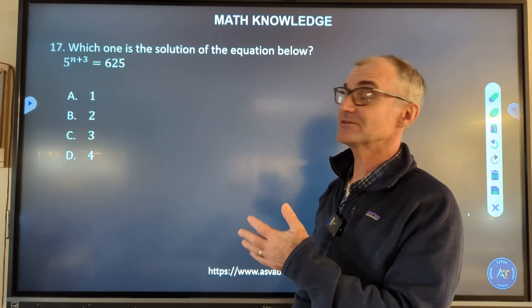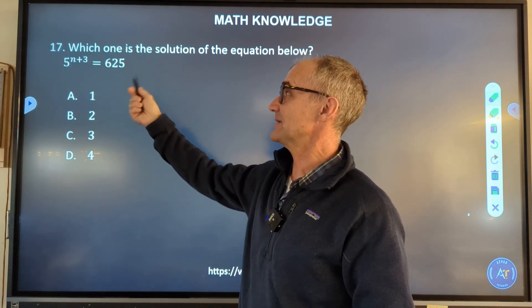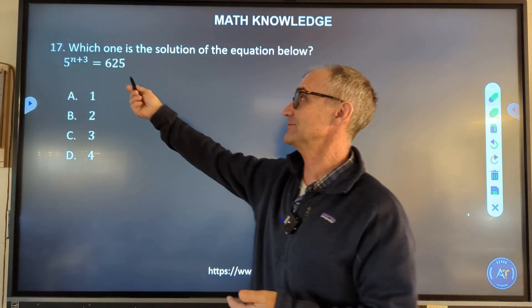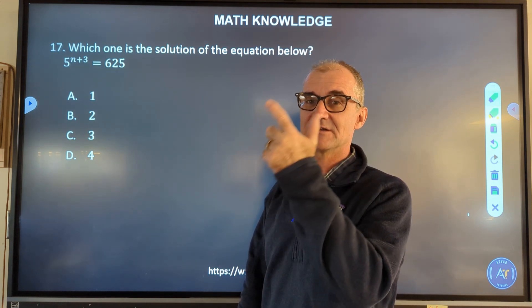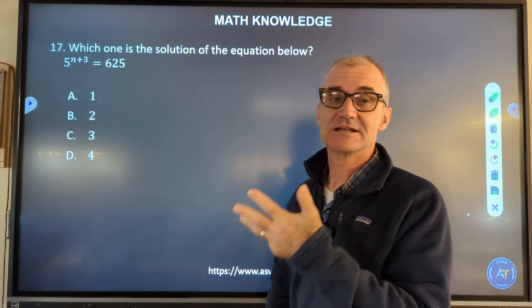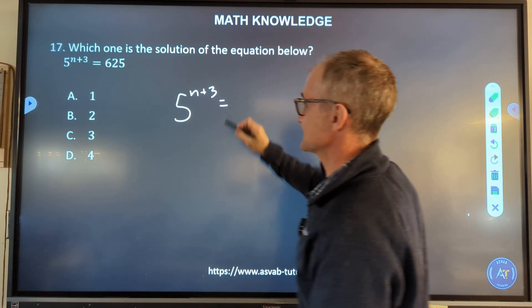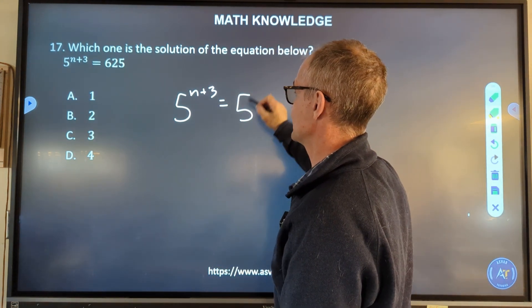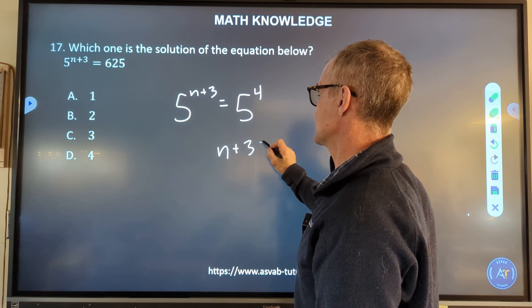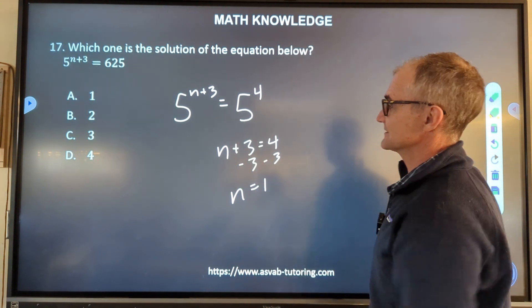Number 17 here, also going to be a test on exponents. I know that if my bases were equal, my exponents would have to be equal. My bases are not equal, but as I look up here, I can see 625 is divisible by 5, so I know that's probably going to be a base 5. So 5 times 5 is 25, times 5 is 125, 125 times 5 is 625. So this 625 right here is the same thing as 5 to the 4th power. So I have 5^(n+3) = 625, or I could write that as 5^4. My bases are equal, therefore my exponents have to be equal. n + 3 = 4. Subtracting 3 from both sides, I could see n equals 1, and that's going to be answer A right there.